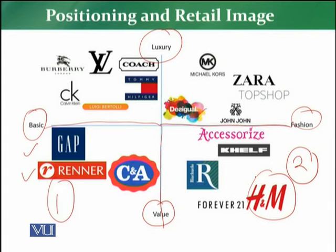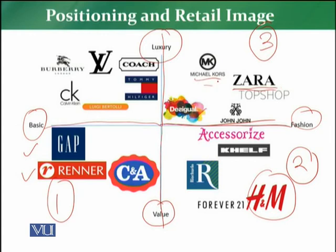In the third quadrant are retailers which offer both fashion and luxury. The top names here are Zara and MK, which offer fashion on one side and luxury on the other. The customer positioning of retailers like Zara, MK, TopShop, and John Lewis in the minds of the customer is that they are fashion brands that also sell luxury.